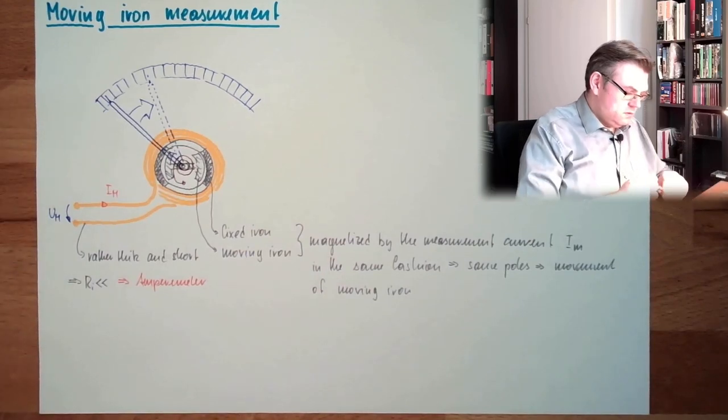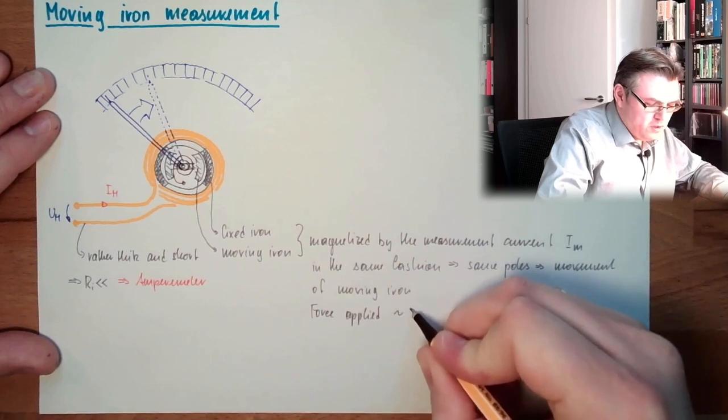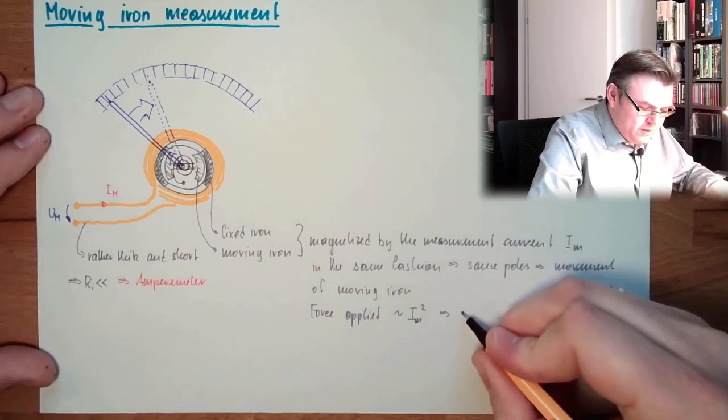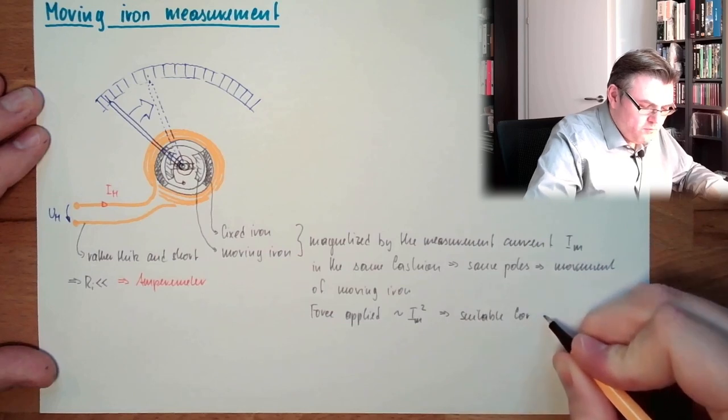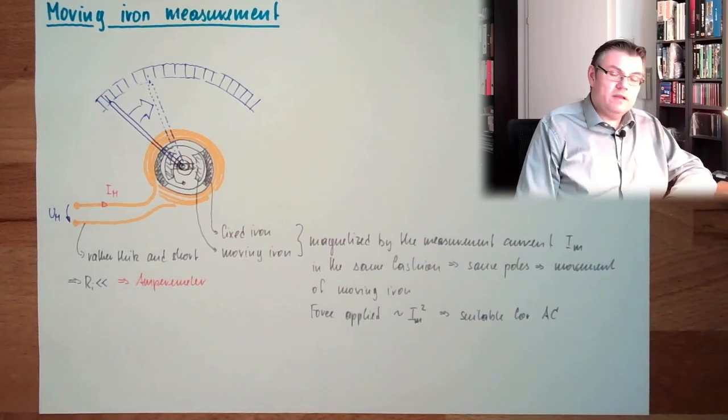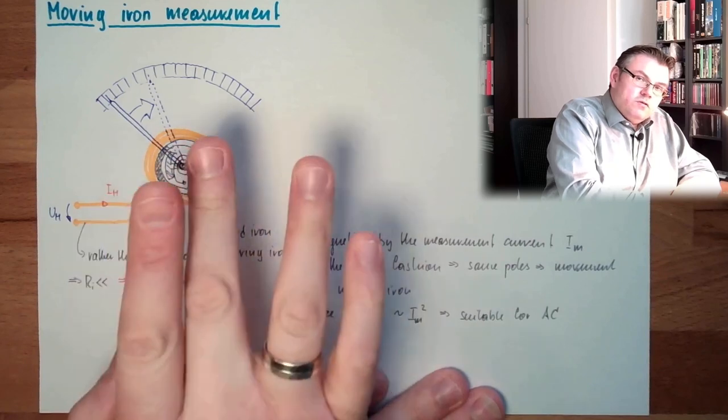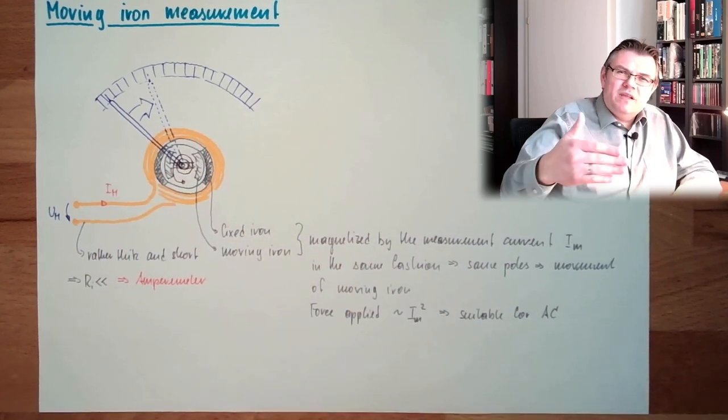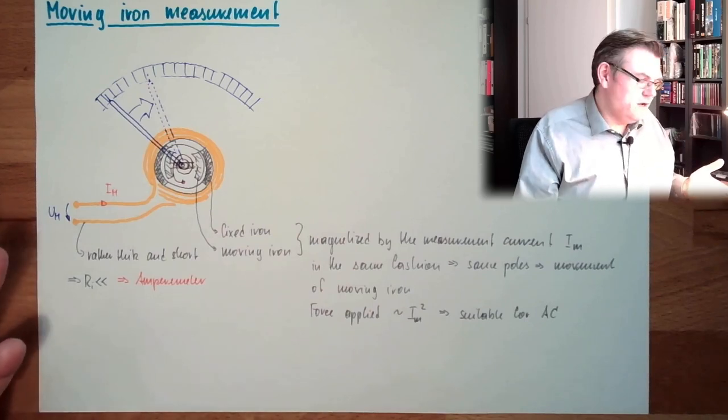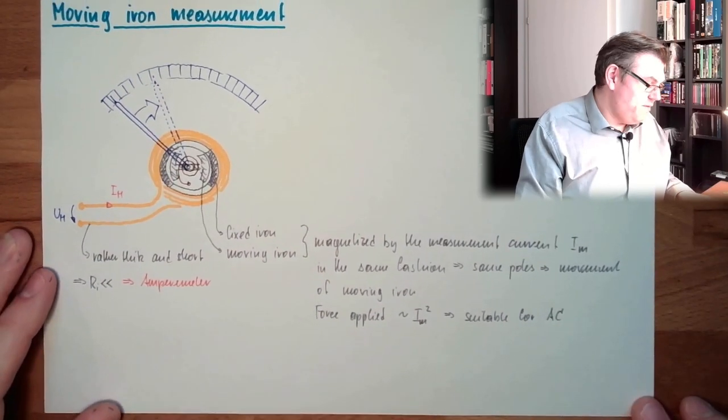The force applied is proportional to the measurement current squared. And so it is suitable for AC. We can directly measure AC, alternating current, since if this is changing plus and minus, also the poles will change, north, south, north, south. But it does not really matter if a north pole is distracting a north pole or a south pole is distracting a south pole. They are distracting each other. If it is a sine AC, a sine wave AC,